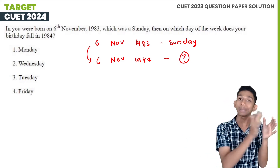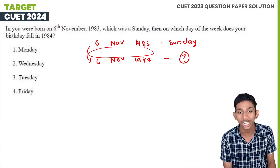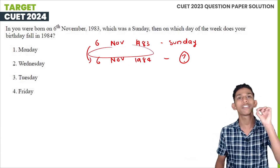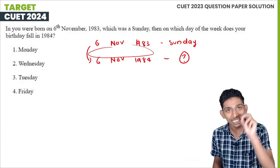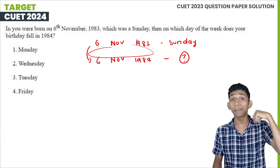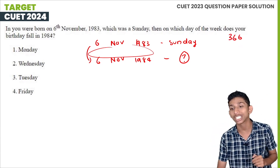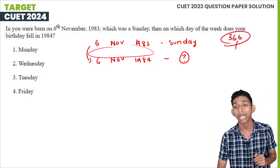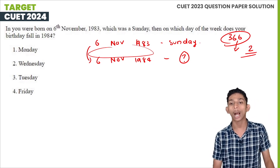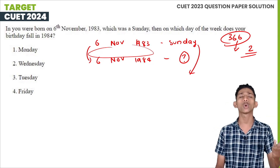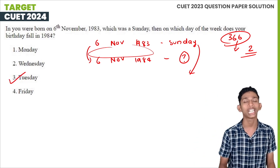So, in a leap year, we have to consider the extra day — February 29th. The leap year adds one extra odd day compared to a non-leap year. So from Sunday, we move two days ahead: Sunday, Monday, Tuesday. The answer is Monday or Tuesday depending on the leap year's odd days calculation.